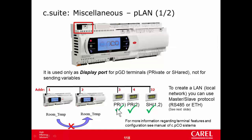Private, like in this example: terminal address 3 is configured as private of device 1, so it will always show the mask of device 1. Similarly, another terminal will always show the mask of device 2.